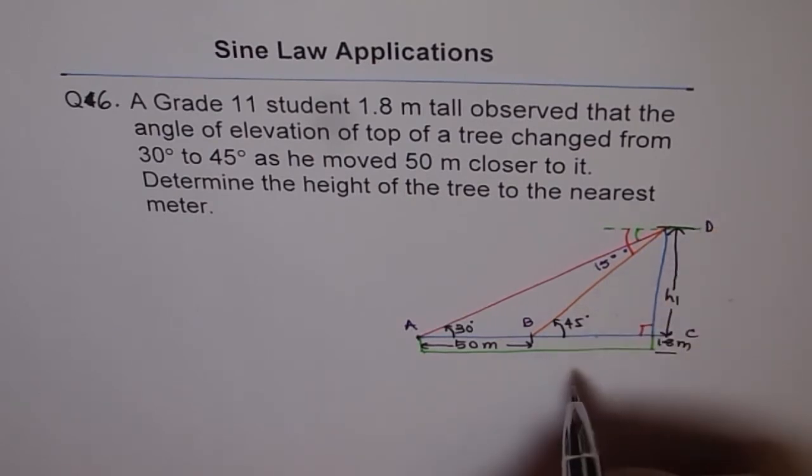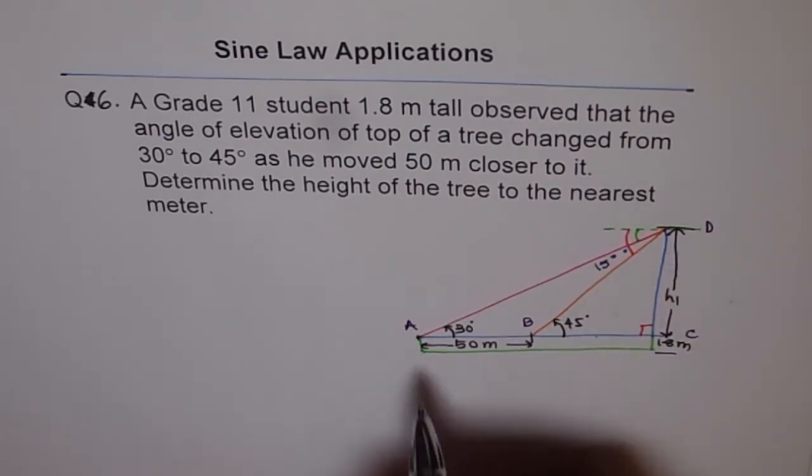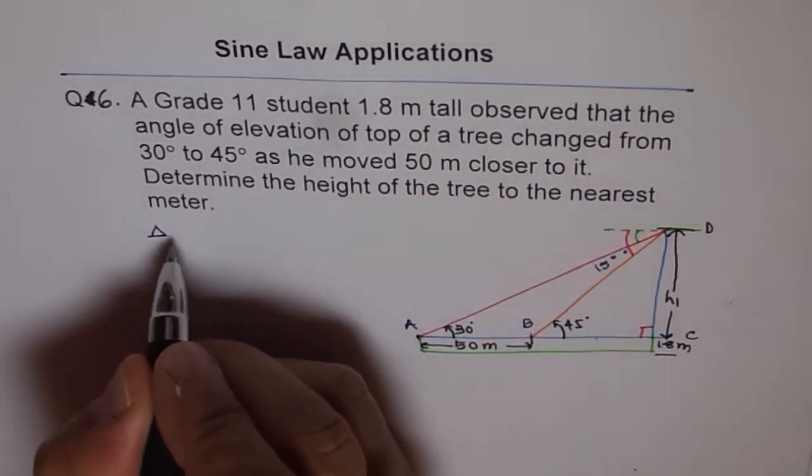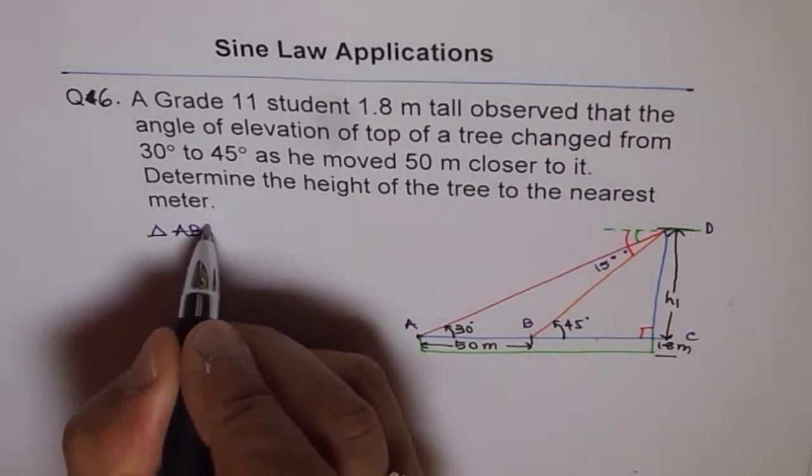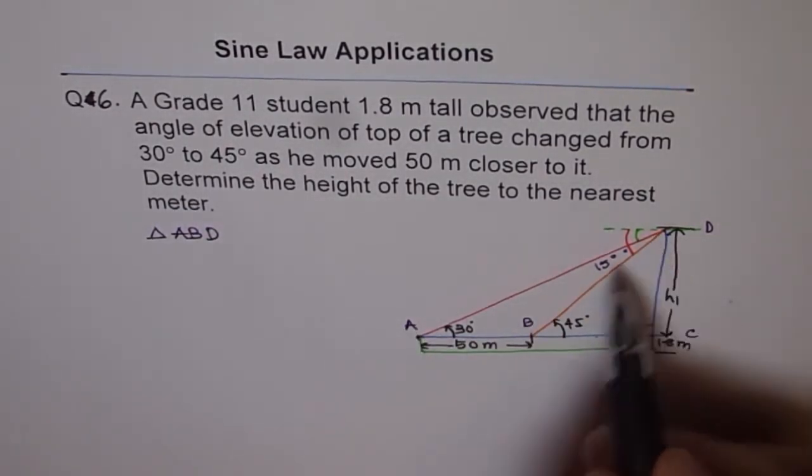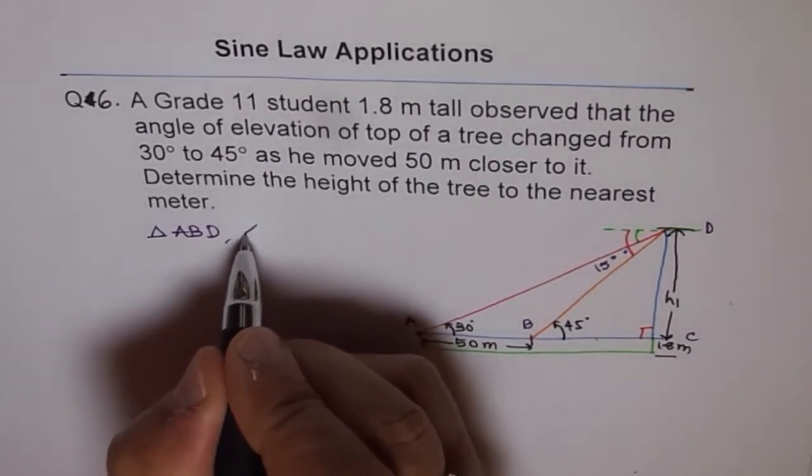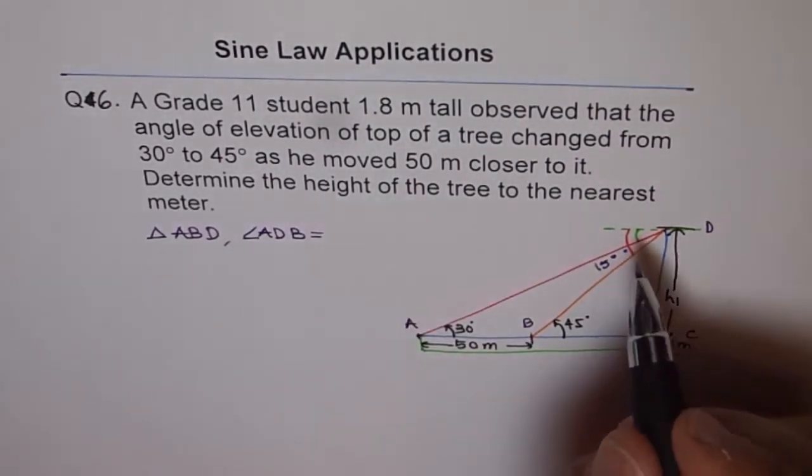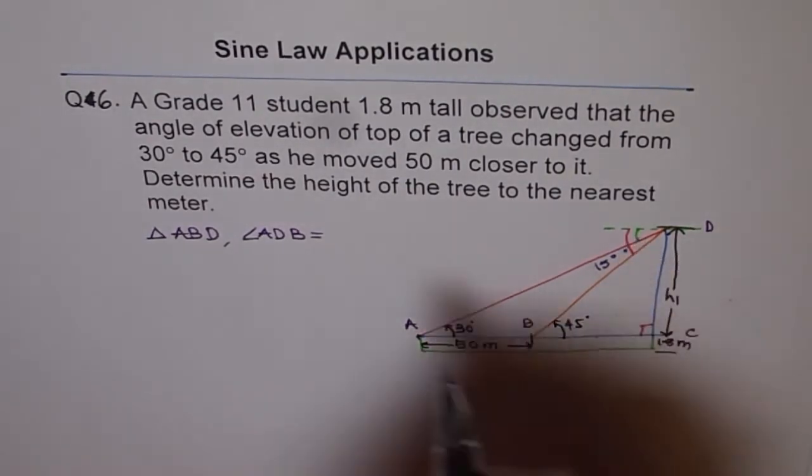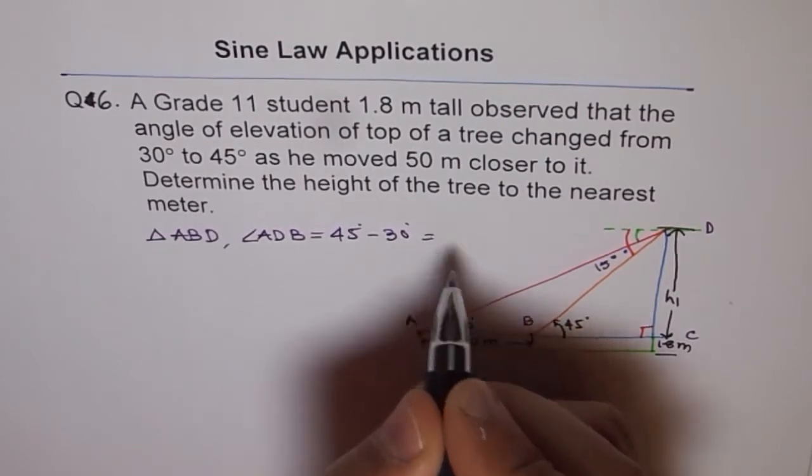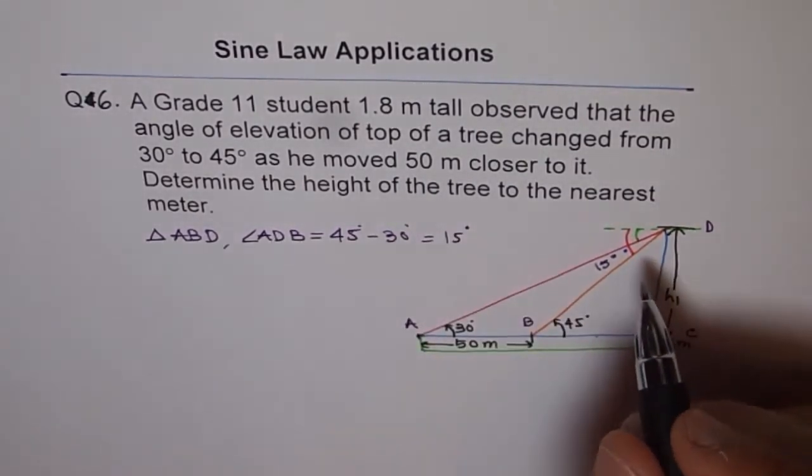So let's say this point is A and this point is B and that is C and this is D for the top of the tree. Now in this case, we are working on the triangle ABD. So in the triangle ABD, what we observe is that angle ADB, the angle ADB is equal to 45 minus 30. So it is equal to 15 degrees. So this is what we figured out.